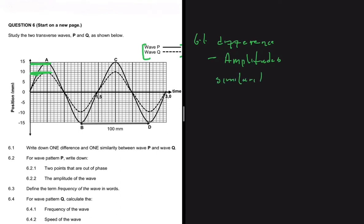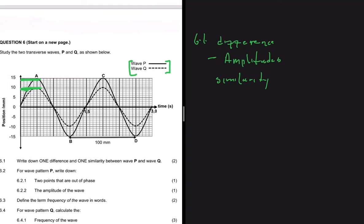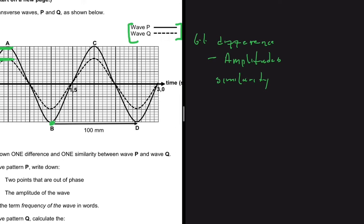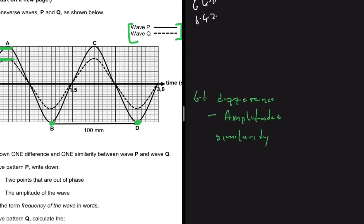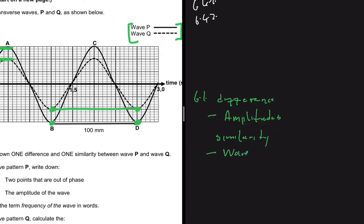Now let's look at the similarity — what do they have in common? If you pay attention to the graph, from point B to point D we have one wavelength, and that distance is 100 millimeters for wave P. For wave Q, the corresponding points at the same positions also span 100 millimeters. So both waves have the same wavelength — that is their similarity.